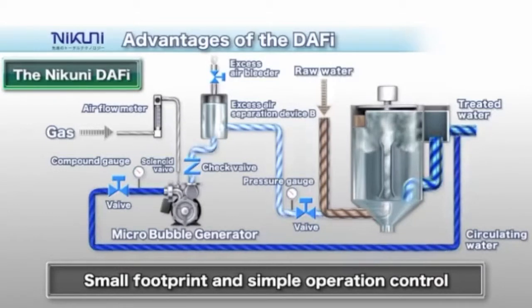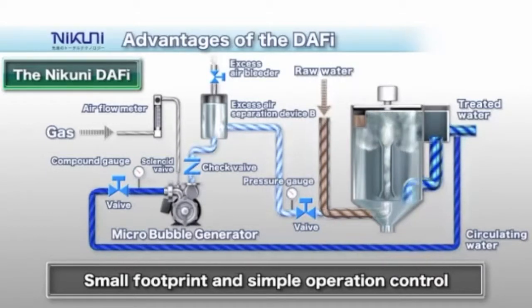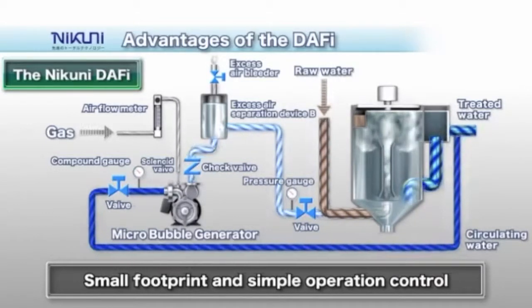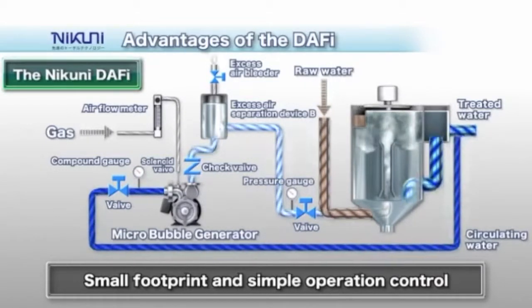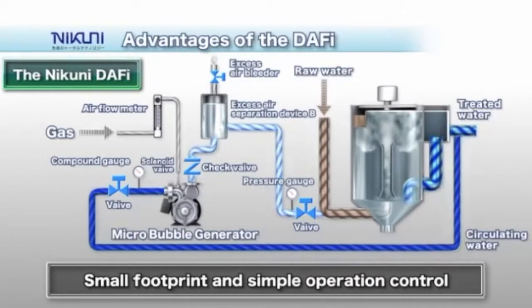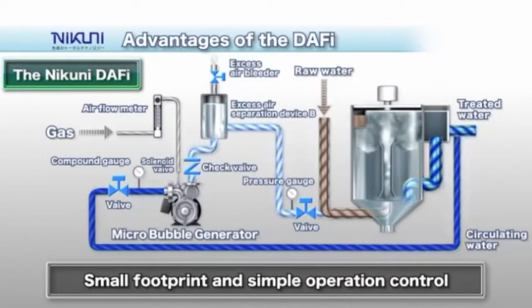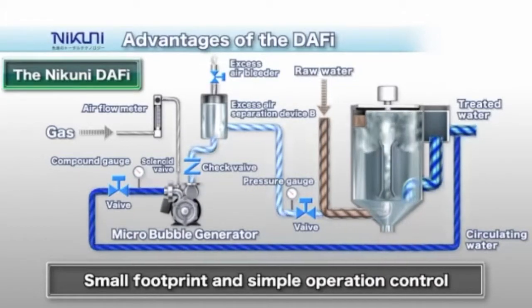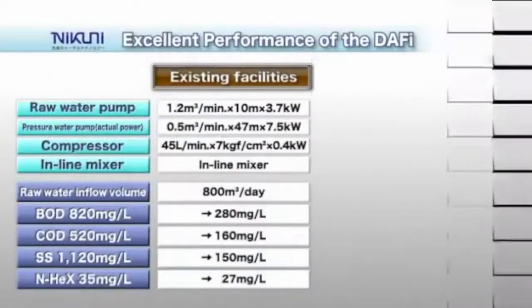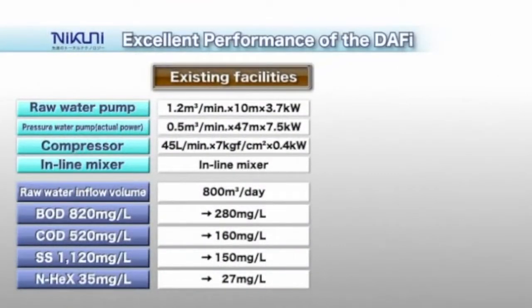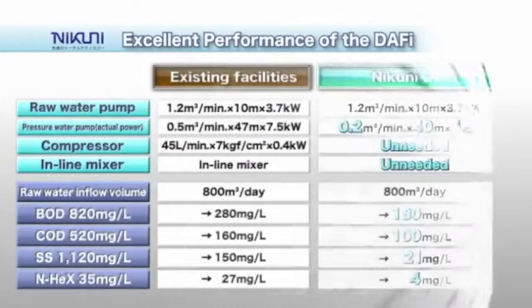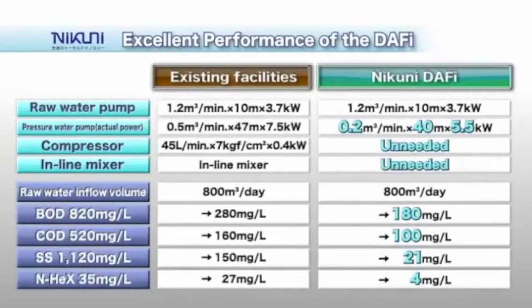Attaching an excess air separation device to the piping on the discharge side of the KTM micro bubble generator allows the system to supply high quality micro bubbles with stable diameter size bubbles.